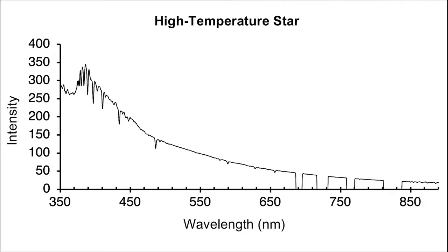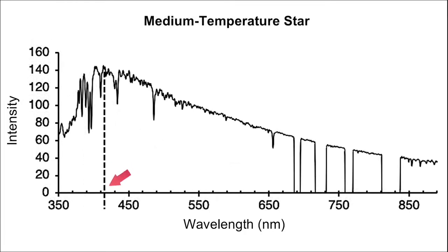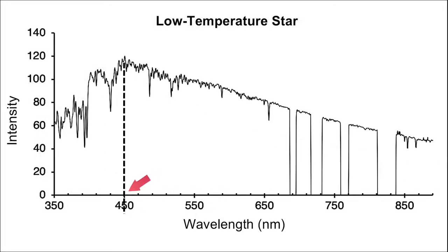Here we can see the stellar spectra of a high temperature star with a short peak wavelength, a medium temperature star with a slightly longer peak wavelength, and a low temperature star with a longer peak wavelength than either of the previous two.